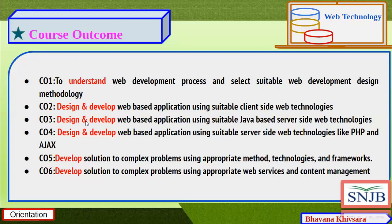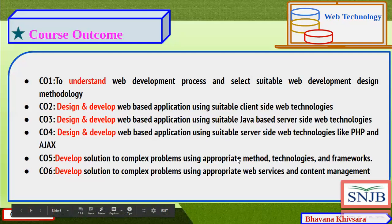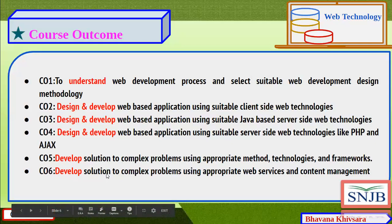CO3: students should be able to design and develop a web-based application using suitable Java-based server-side web technology. Server-side web technology is divided into CO3 and CO4 — Unit 3 covers server-side technologies linked to Java, and Unit 4 covers server-side technology with PHP and Ajax in detail. CO5 is to develop solutions to complex problems using appropriate technology and frameworks. CO6 is to develop solutions using appropriate web services and content management.